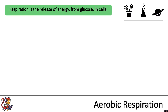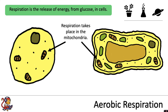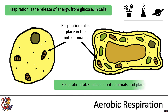Respiration is the release of energy from glucose in cells. Respiration takes place in the mitochondria — you can see we've got an animal cell and a plant cell here, because respiration takes place in both animals and plants.